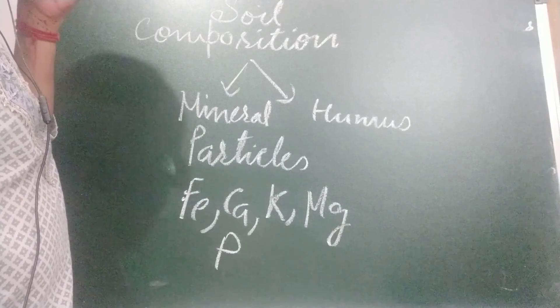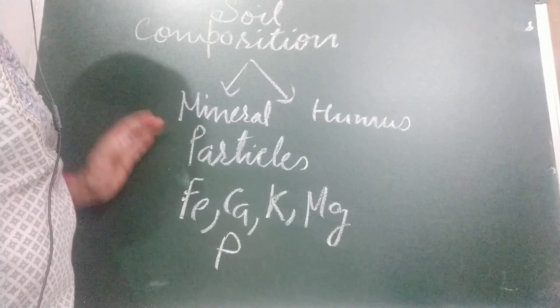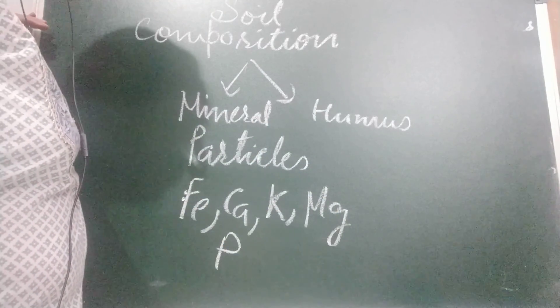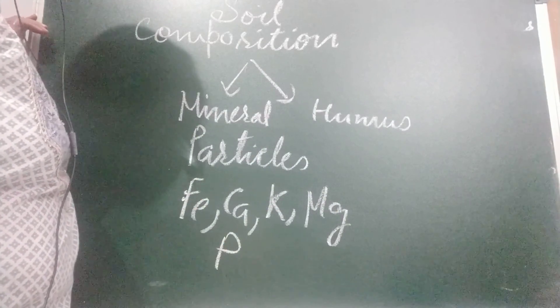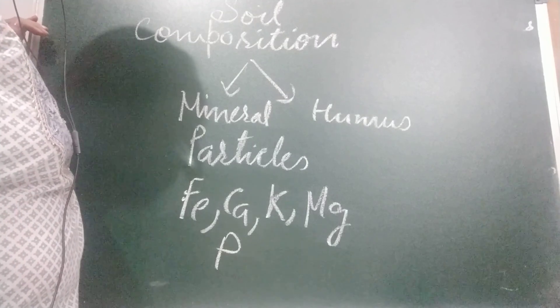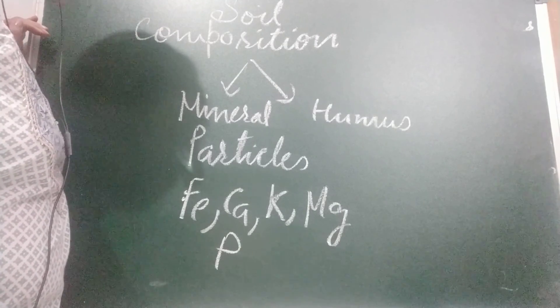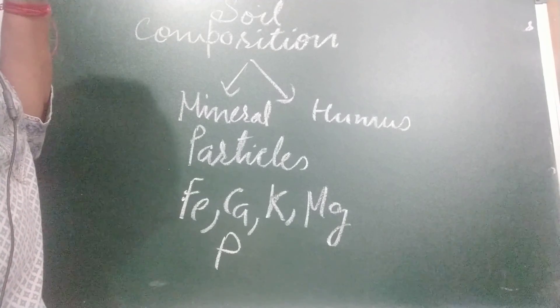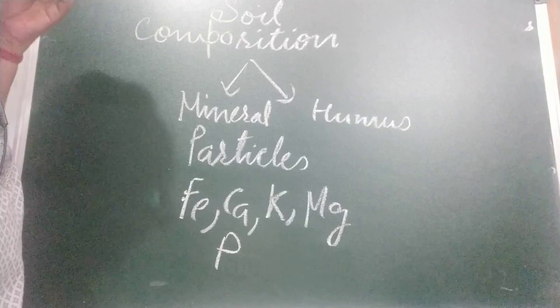Many of these minerals are needed by plants for their growth. Second part is humus. The other component is humus which is dark brown in color and consists of decaying remains of plants and animals. A variety of dead and decaying organisms contribute to the formation of humus.